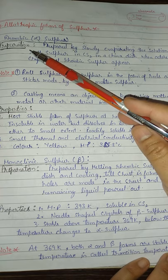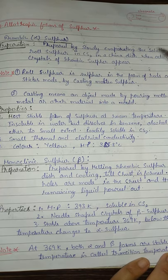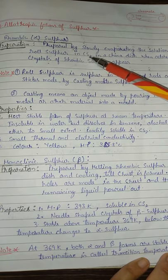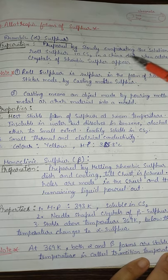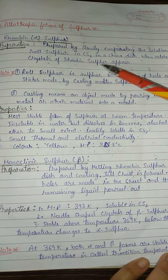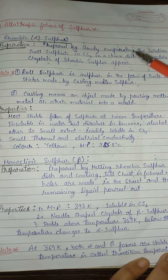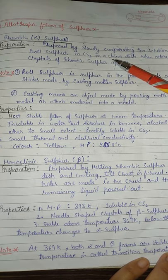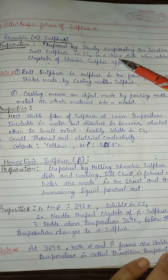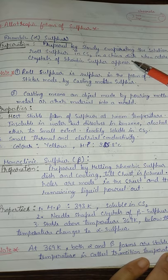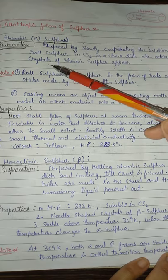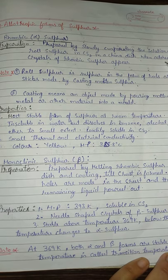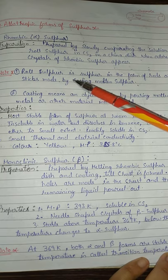Preparation of rhombic sulfur: it is prepared by slowly evaporating the solution of roll sulfur in carbon disulfide in a china dish. When the solution evaporates, octahedral crystals of rhombic sulfur appear in the china dish.